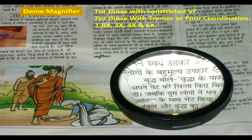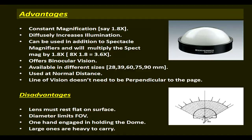Advantages of the dome magnifier include constant magnification, diffused increasing illumination, can be used in addition to spectacles, and multiplies spectacle magnification by 1.8x. It offers binocular vision, is available in different sizes, and the line of vision does not need to be perpendicular to the surface. Disadvantages include that the lens must rest flat on the surface, its diameter limits the field of vision, and large ones are heavy to carry.